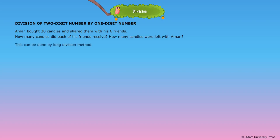This can be done by long division method. 20 divided by 6. Here, 20 is called the dividend. 6 is called the divisor.